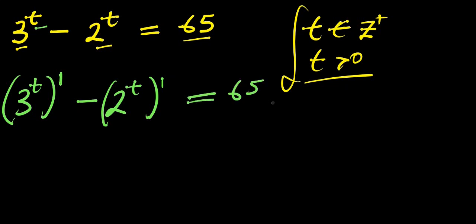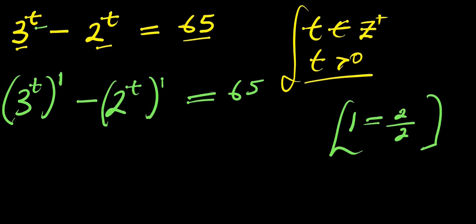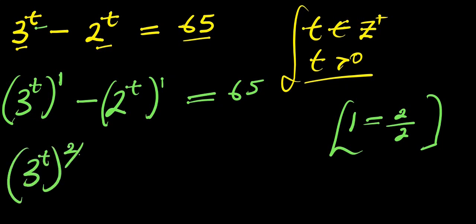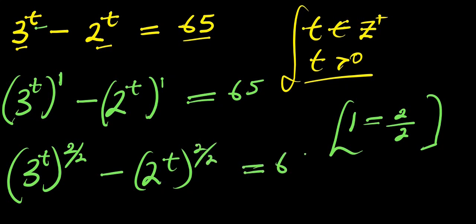The next thing I'm going to do is make use of an equivalent fraction. Instead of writing 1, I can have 2 divided by 2. Why am I doing this? It's to end up having a difference of two squares — I want to have a 2 here and a 2 there. So I'm going to have 3 power t raised to 2 over 2, minus 2 power t raised to 2 over 2, and this equals 65.